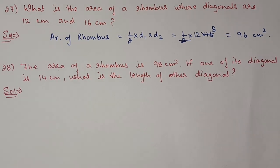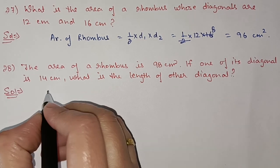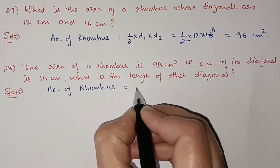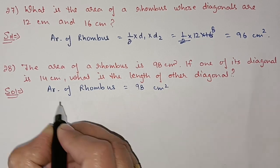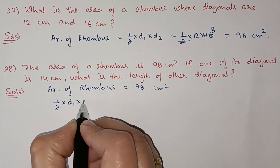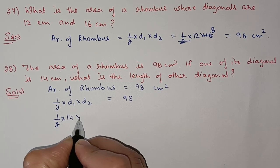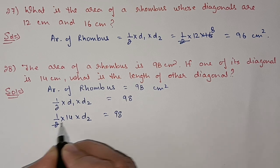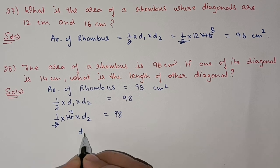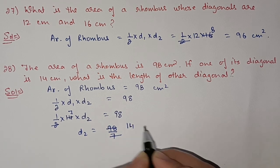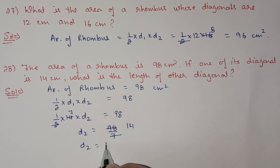Question number 28: the area of a rhombus is 98 centimeter square. If one diagonal is 14, what is the length of the other diagonal? Using the formula: area equals half D1 into D2, we get 98 equals half into 14 into D2. Cancelling, 7 times D2 equals 98, so D2 equals 14 centimeter.